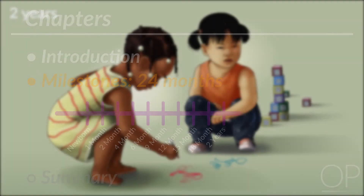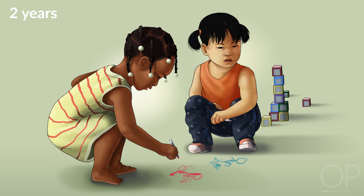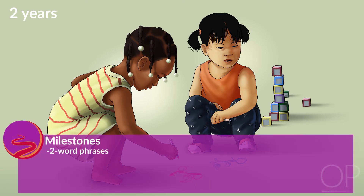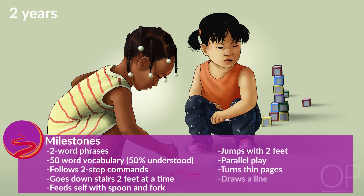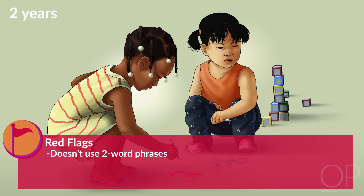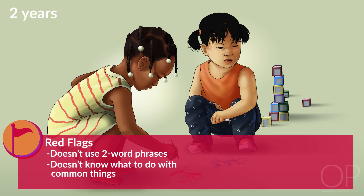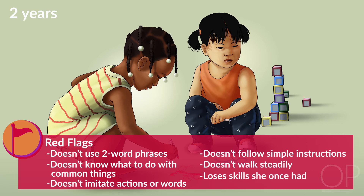24 months: Two years is a big time — she really wants to increase her independence. She is putting two words together and has about 50 words to choose from, but only 50% are understood by others. She is following two-step commands and going up and down stairs two feet at a time while holding onto a railing. She is feeding herself with two utensils, a spoon and a fork, jumping with two feet off the floor, and turning thin pages and drawing lines. Her block tower has doubled to six blocks high. Red flags at two years include not using two-word phrases, not knowing what to do with common things such as a brush, spoon, or phone, not imitating actions or words, not following simple instructions, not walking steadily, or losing skills she once had.